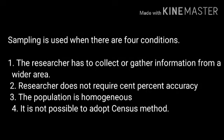Sampling is used when four conditions are met. First, the researcher has to collect or gather information from a wider area. Second, the researcher does not require the same level of accuracy as a census. Third, the population is homogeneous. Fourth, it is not possible to adopt the census method.